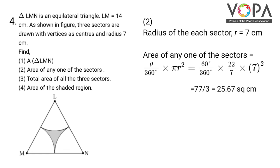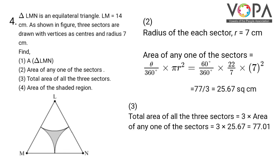Total area of all three sectors equals 3 multiplied by the area of any one sector. So that is 3 multiplied by 25.67, which gives 77.01 square cm.